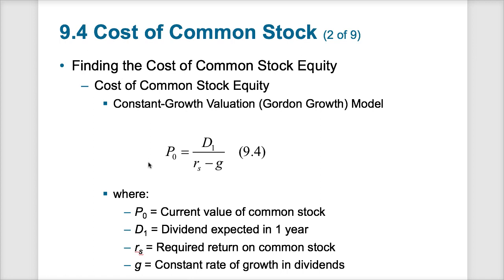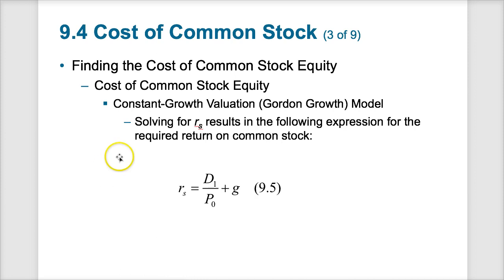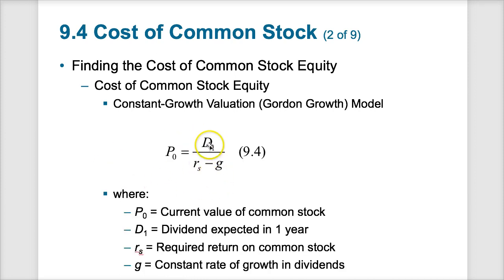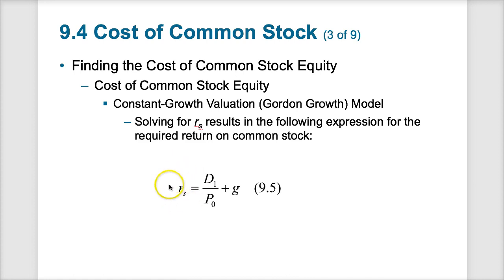To calculate the cost of common stock, we use the Gordon model from Chapter 7. The Gordon model calculates the price of a stock by dividing the dividend by the required rate of return minus the growth rate. Using algebra, we can rearrange this so that the required rate of return equals the dividend divided by the stock price, plus the growth rate. This gives us the cost of equity for a constant growth valuation model. However, this model is not used too often because very few companies pay a constantly growing dividend anymore.